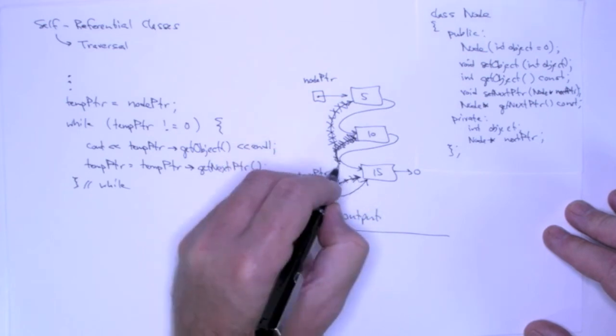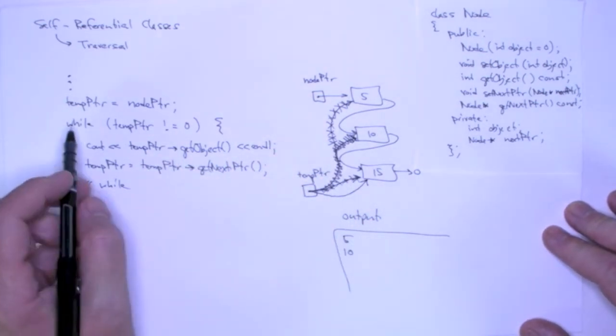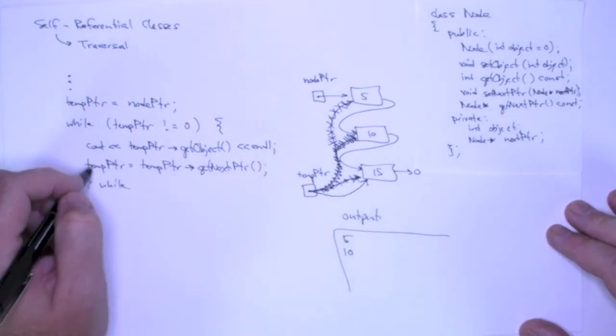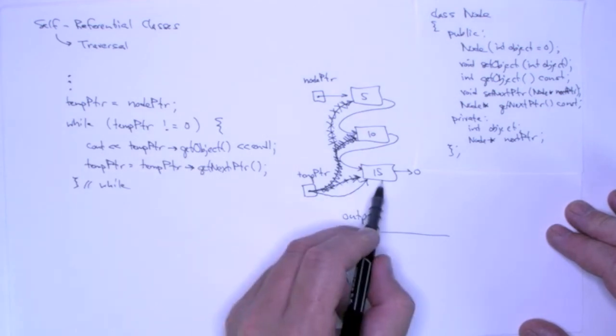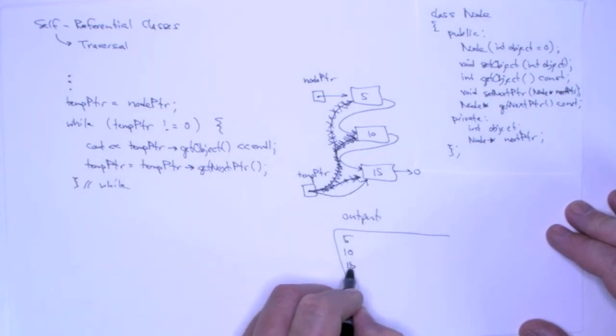Get rid of my scribbles here. I go back to the top of the while loop. Does temp pointer point to something? Yes, it does. So I enter the while loop and I call get object on that node. It returns 15 and that's printed to the console.